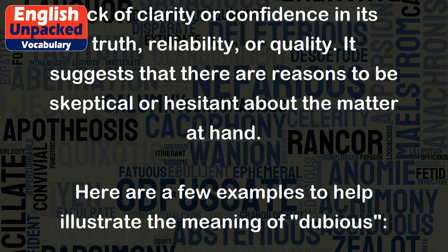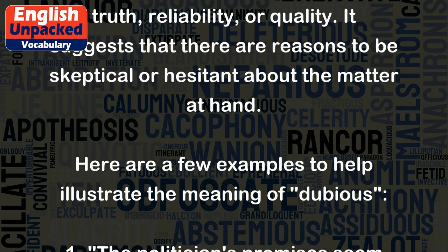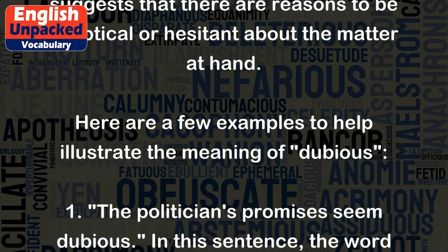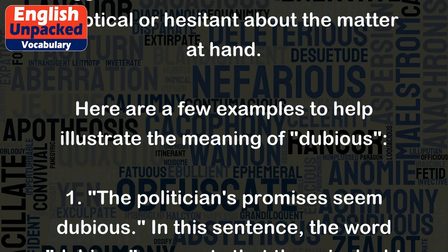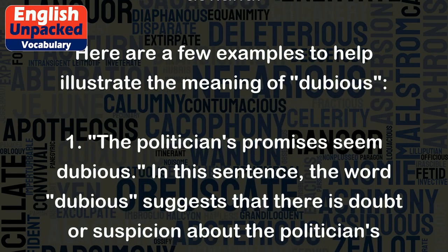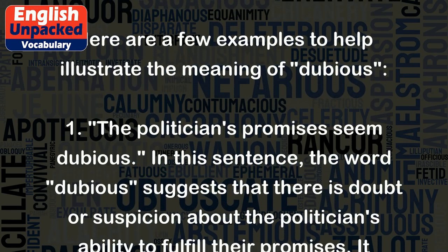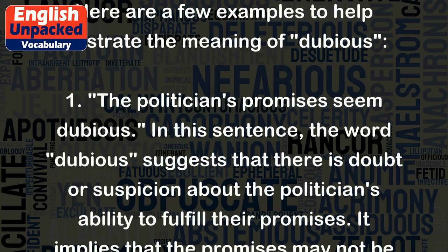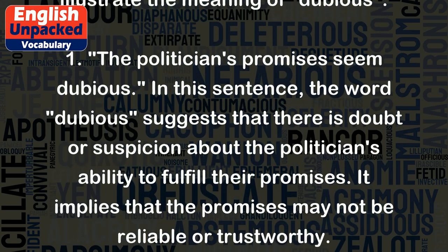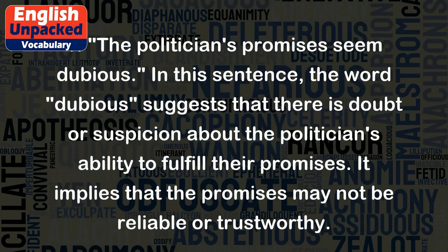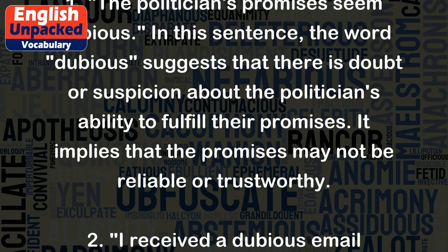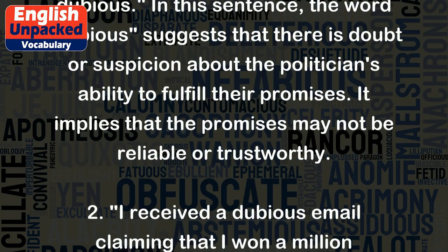Here are a few examples to help illustrate the meaning of dubious. One: The politician's promises seem dubious. In this sentence, the word dubious suggests that there is doubt or suspicion about the politician's ability to fulfill their promises. It implies that the promises may not be reliable or trustworthy.